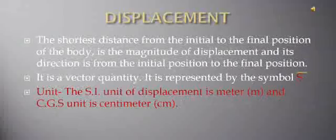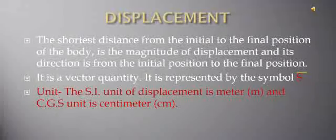Displacement: the shortest distance from the initial to the final position of the body. The shortest distance from the initial to the final position is the magnitude of displacement, and its direction is from the initial position to the final position. Displacement is a vector quantity — it has both distance and direction. It is represented by the symbol S with an arrow on it. The SI unit of displacement is meter and the CGS unit is centimeter.